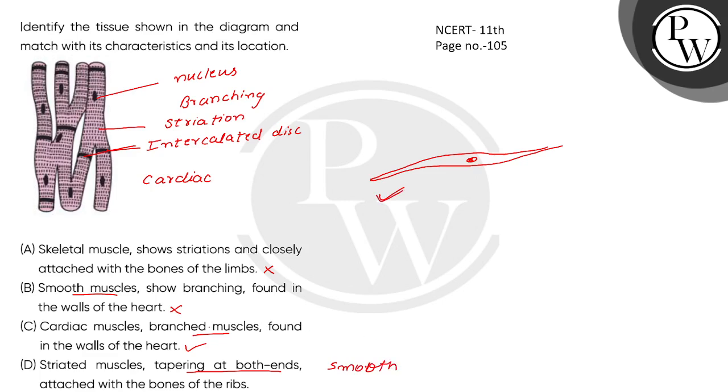Smooth muscle. So here this is also incorrect. The correct option is your option C. Regarding information, new or old NCERT class 11, page number 105. Thank you for that.